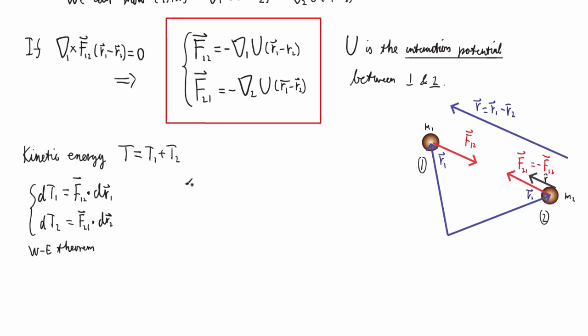This is the work-energy theorem. So let's now look at the total kinetic energy. That's of course equal to dT1 plus dT2, and we can just write that as F12 dot dR1 plus F21 dot dR2. That makes sense, right? So now we have the change of kinetic energy of this particle due to the change of its position and the force acting on it. Same thing for particle two. That's all we expressed here. But we can rewrite it because we know that Newton's third law is valid.